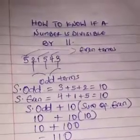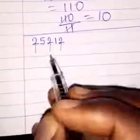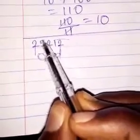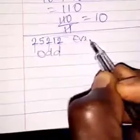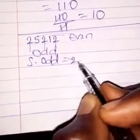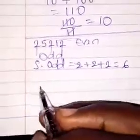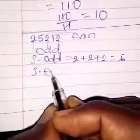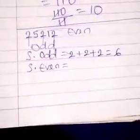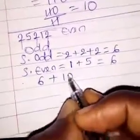For another example, we identify the odd positions and the even positions. The sum of the odd-position digits is 2 plus 2 plus 2 plus 2, which equals 8. The sum of the even-position digits is 1 plus 5, which equals 6.